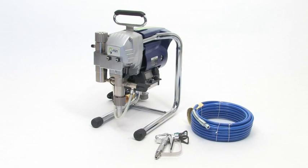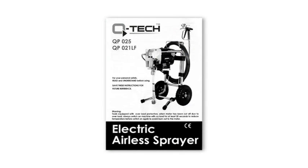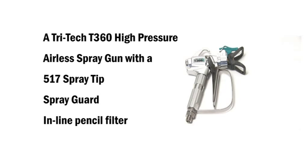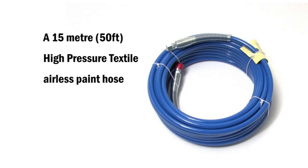There are some essential tools and accessories that come with all Q-TEC sprayers. Each model comes with a full safety instruction manual, a Tritec T-360 high-pressure airless spray gun which comes with a 517 spray tip, spray guard, and an inline pencil filter, a 15-meter, 50-foot high-pressure textile airless paint hose.